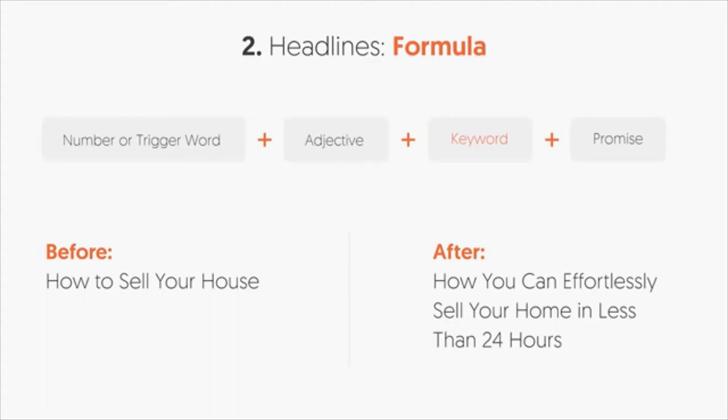An example of not using the headline formula would be 'how to sell your house' — not very attractive. After using the formula, you get something like 'How You Can Effortlessly Sell Your Home in Less Than 24 Hours.' Don't be deceptive though. If you can't help people sell in 24 hours, maybe use 30 days instead — that's still a compelling promise that'll cause a lot of people to click through.